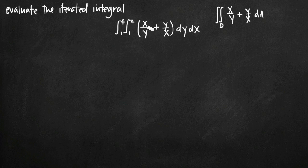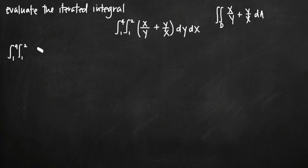Back to our problem: we're integrating first with respect to y because dy is on the inside. That means we're treating y as our variable and x as a constant. We can rewrite the function — the integral from 1 to 4, the integral from 1 to 2 — to give a clearer picture. We'll write it as 1 over y times x, plus 1 over x times y.